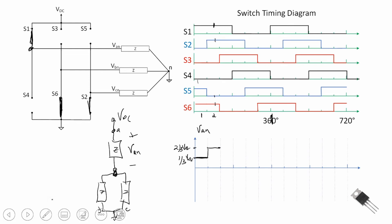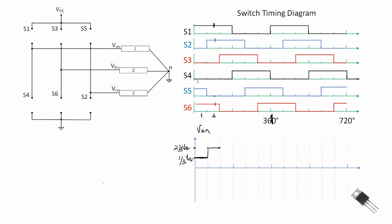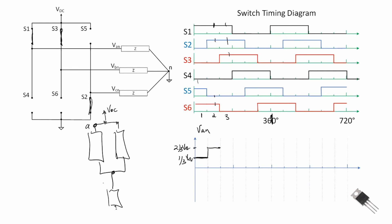In switching period three, S1 is still closed, S2 is still closed, and now S3 closes — the rest are open. Drawing the equivalent circuit, node A is still connected to VDC and node B is now also connected to VDC, while node C is connected to ground. With this configuration, VA-to-neutral goes back to one-third VDC.